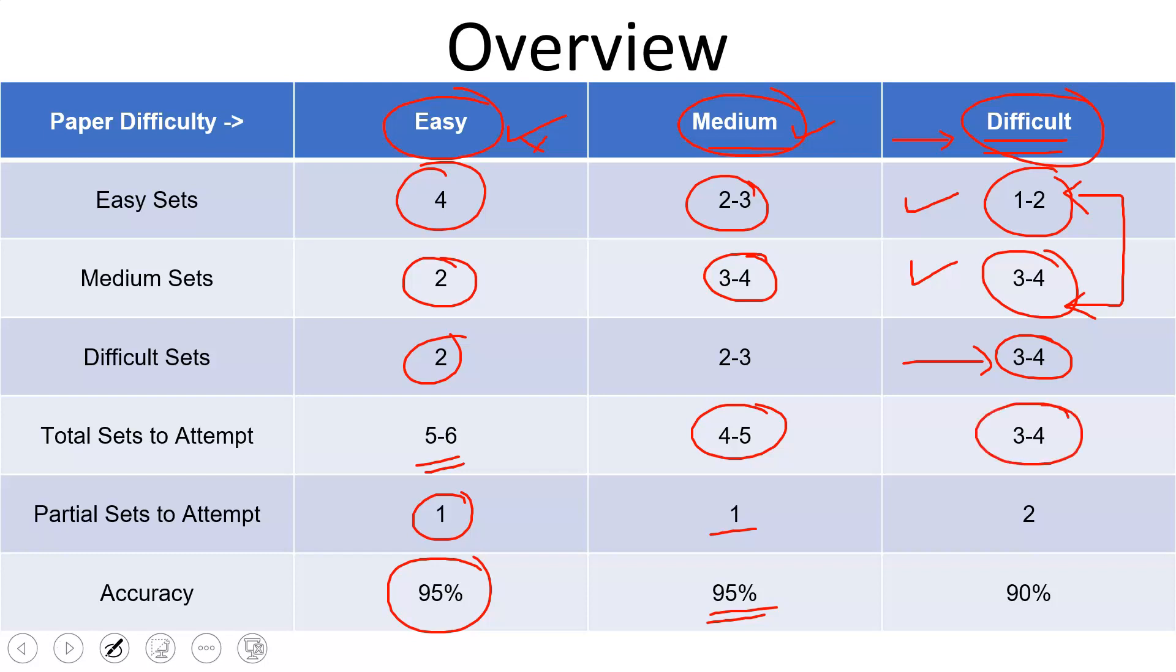Total sets to attempt would be three to four sets. That is somewhere around twelve to sixteen questions. And partial sets to attempt would be two. Here you attempt somewhere around two to four questions. So total you need to attempt fourteen questions to twenty questions. Your target should be ninety percent accuracy. You shouldn't go below that. The score you should target is somewhere around forty-five. If you get forty-five in DILR section and the paper is difficult, you would definitely get a ninety-nine plus. And this is from past year records.